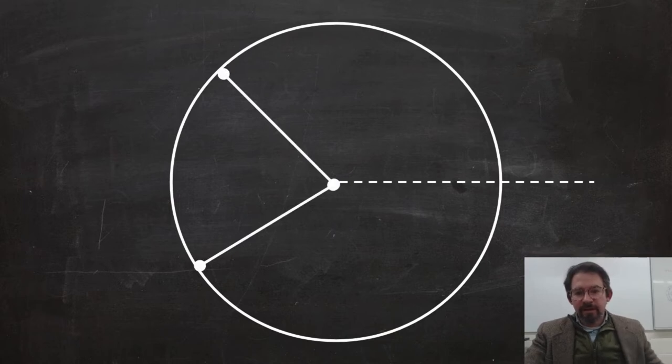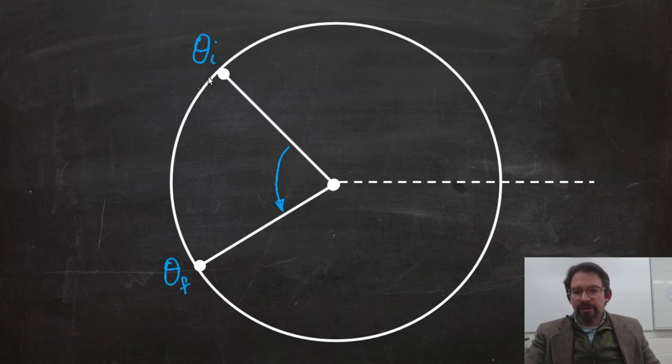And we said that we can define this angle in terms of fractions of the whole circle that are divided by 2 pi, and we call those measures of angle radians. So suppose this is the initial angle, and this is the final angle. We can define a change in angle that we call delta theta, and this delta theta is equal to theta final minus theta initial.